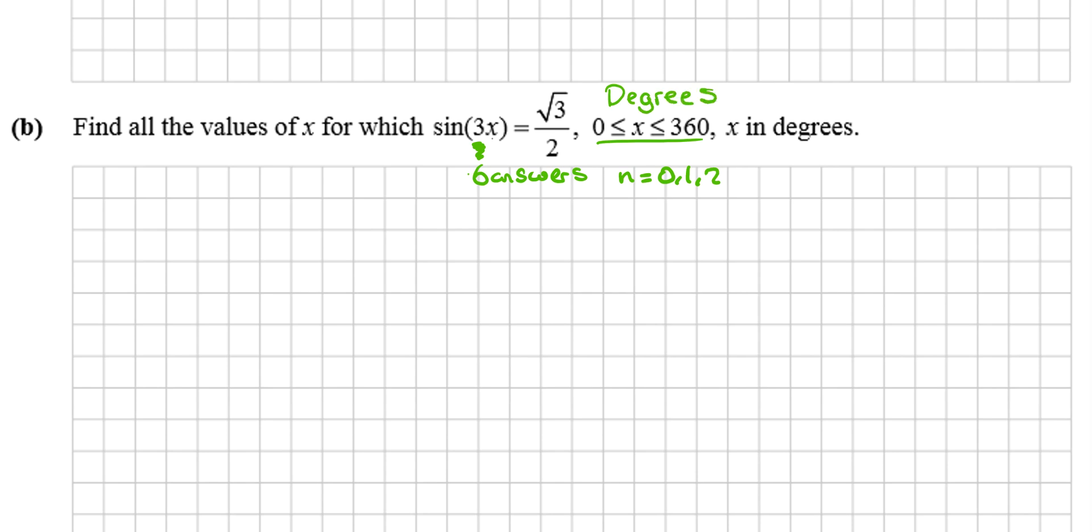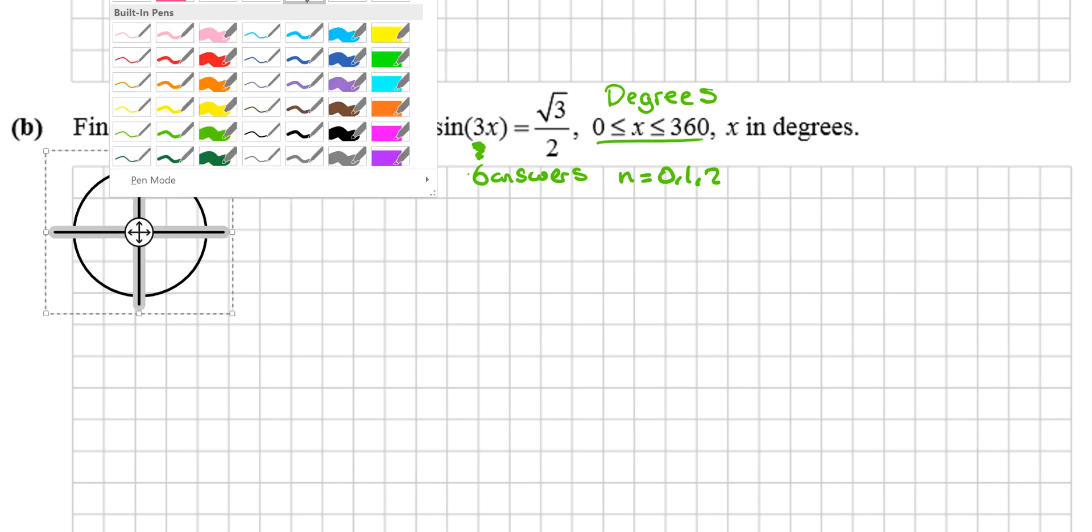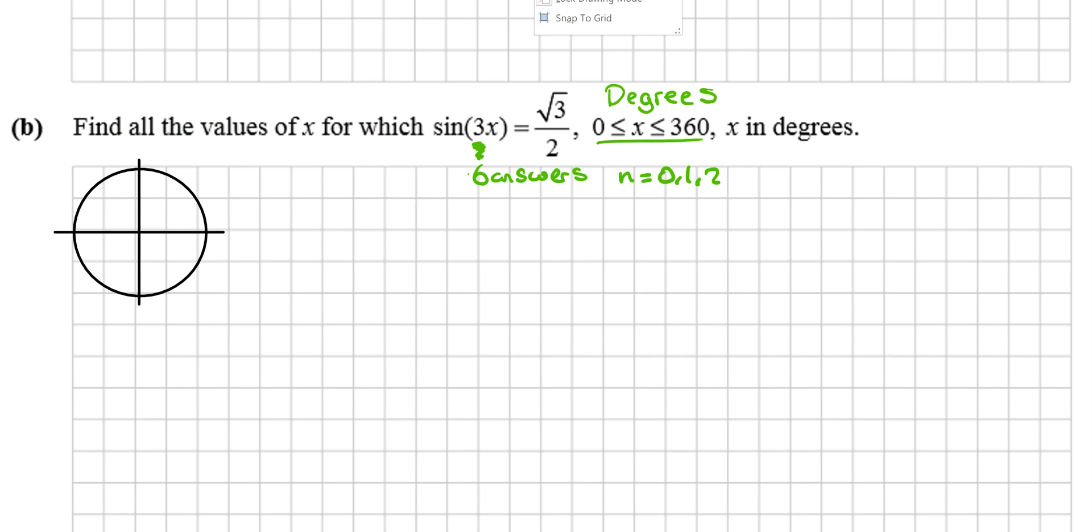Okay, we're looking for where sine is positive. So what quadrants is sine positive in? Sine is positive in the first—so it goes All Sine Tan Cos—sine is positive in the first quadrant.